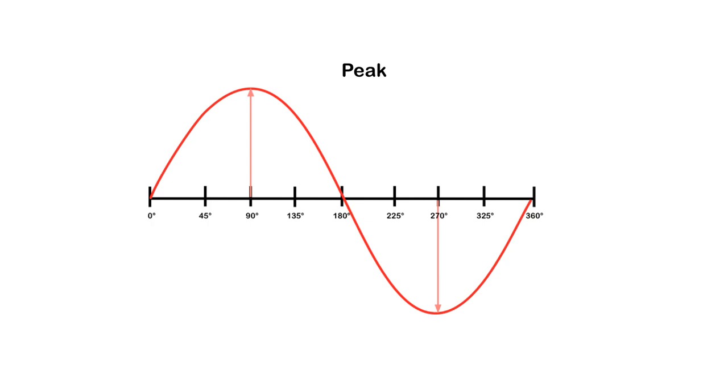We also have what's known as peak. We have our positive alternation here, our peak is the top of the sine wave, and we have a negative alternation and therefore we also have a peak in the negative direction. So you see there that we get a peak value positive and a peak value negative.